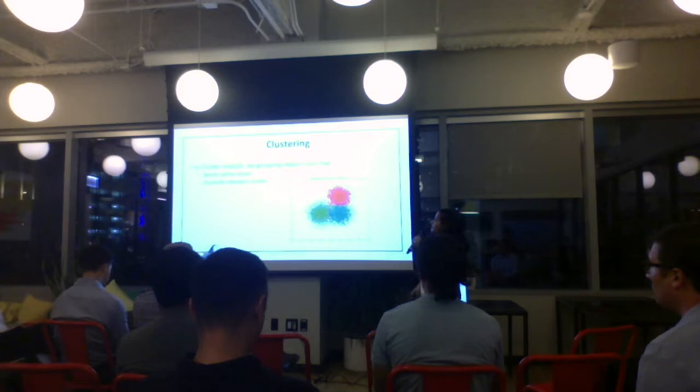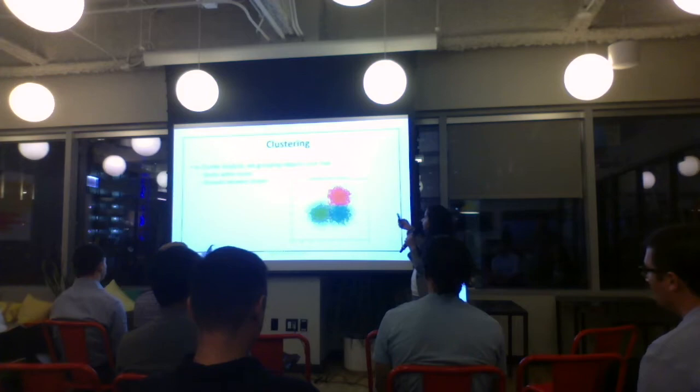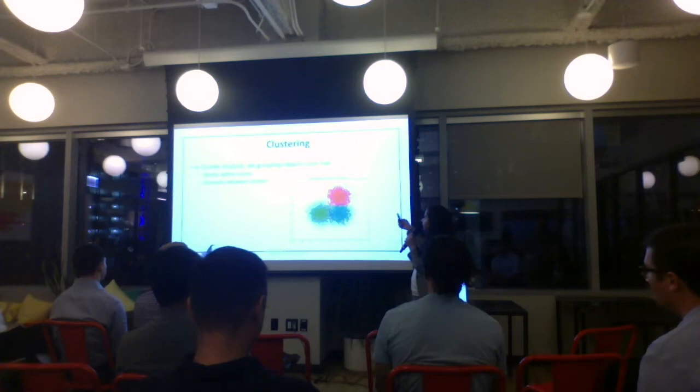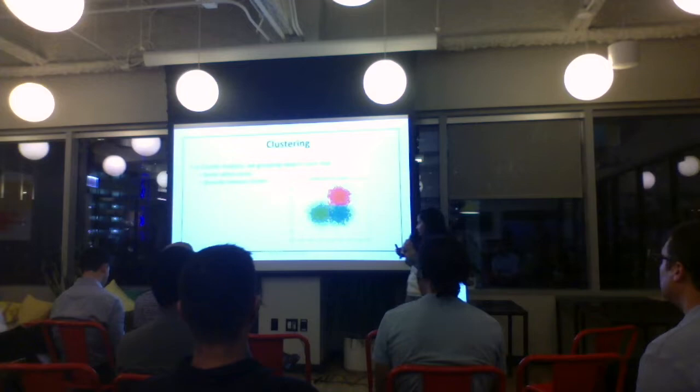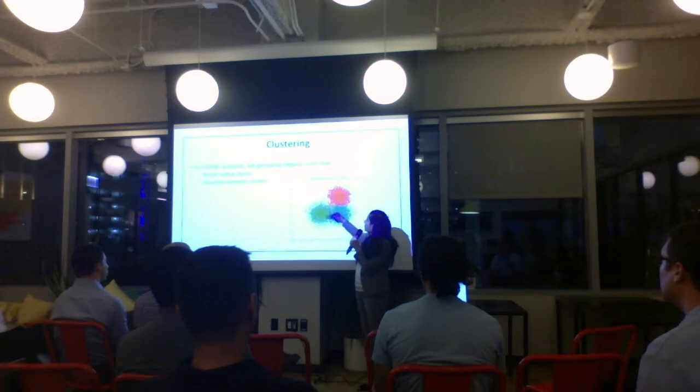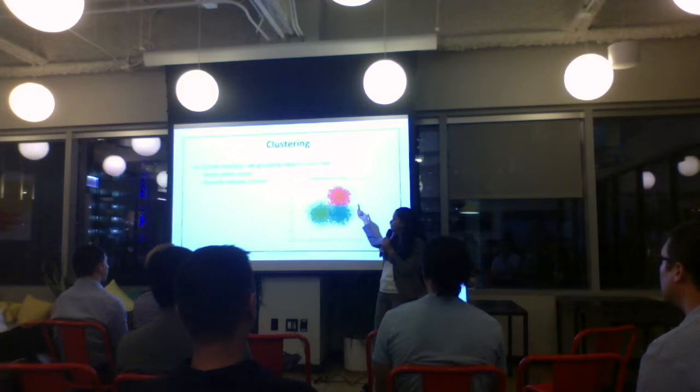The most popular unsupervised technique is clustering. Here there is no target variable. Just like in the fruits example, you come up with groups of objects such that the points within a group are more similar to each other than to points in another group — similar within the cluster and dissimilar between clusters. That's how you come up with groupings of data points.